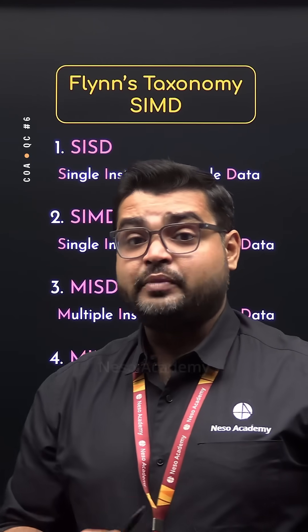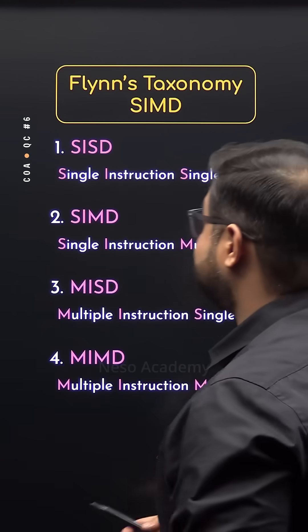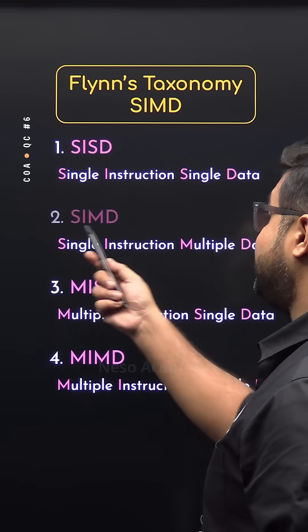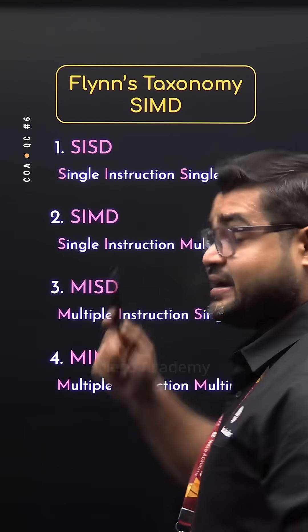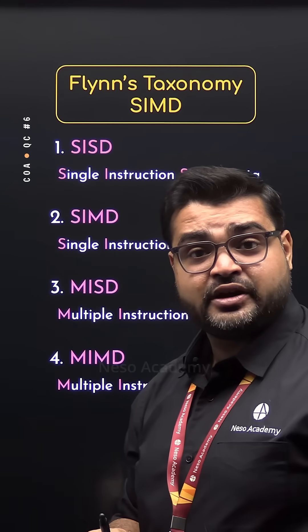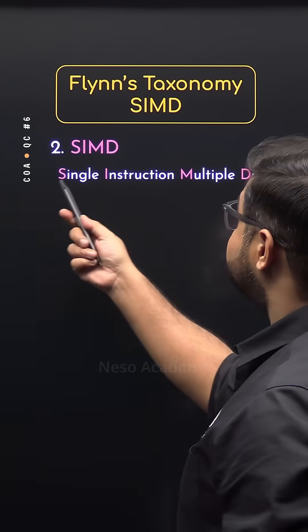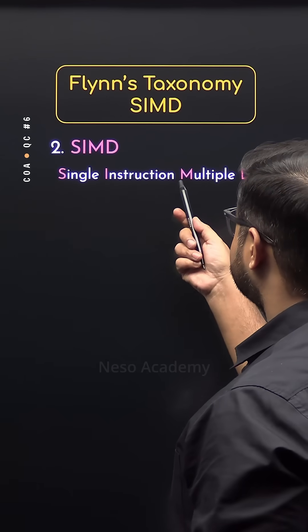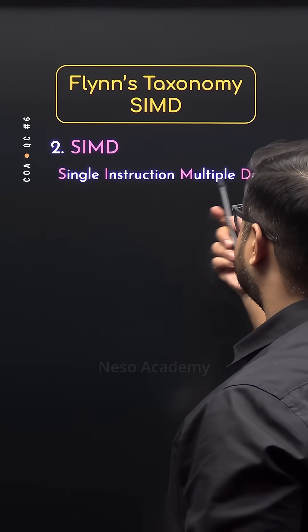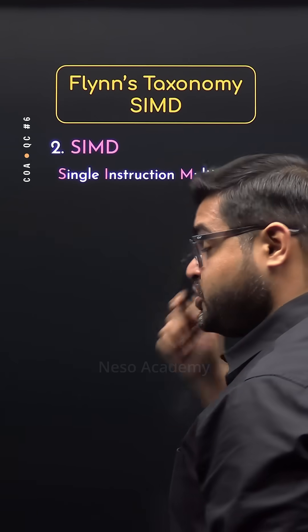In Flynn's Taxonomy, the second category is SIMD. Let's learn about that today. SIMD stands for Single Instruction Stream, Multiple Data Stream.